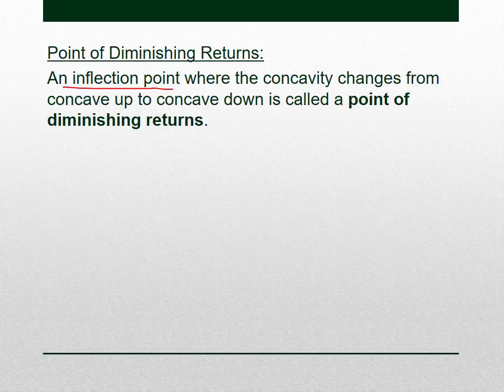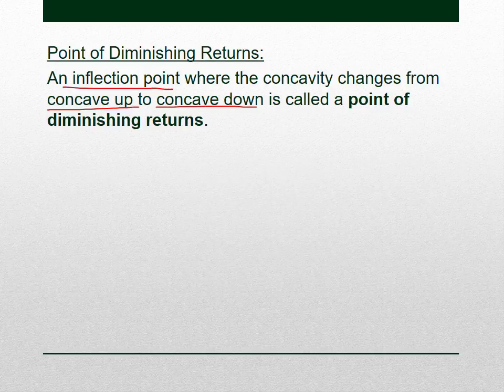A point of diminishing returns is a business term — it's an inflection point where the concavity changes specifically from concave up to concave down. So the point (x₀, p) where we were concave up and then became concave down would be called a point of diminishing returns for this function.